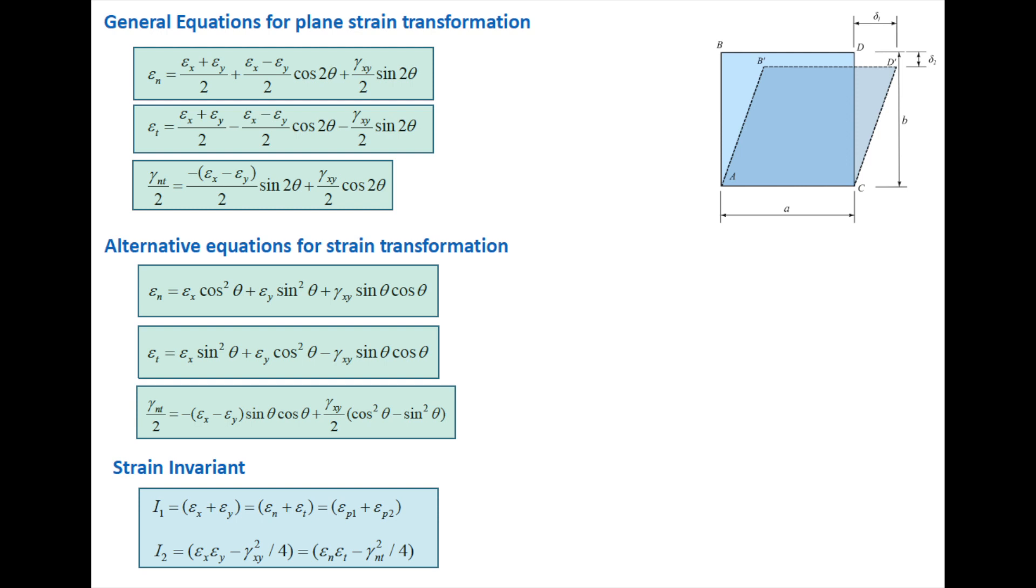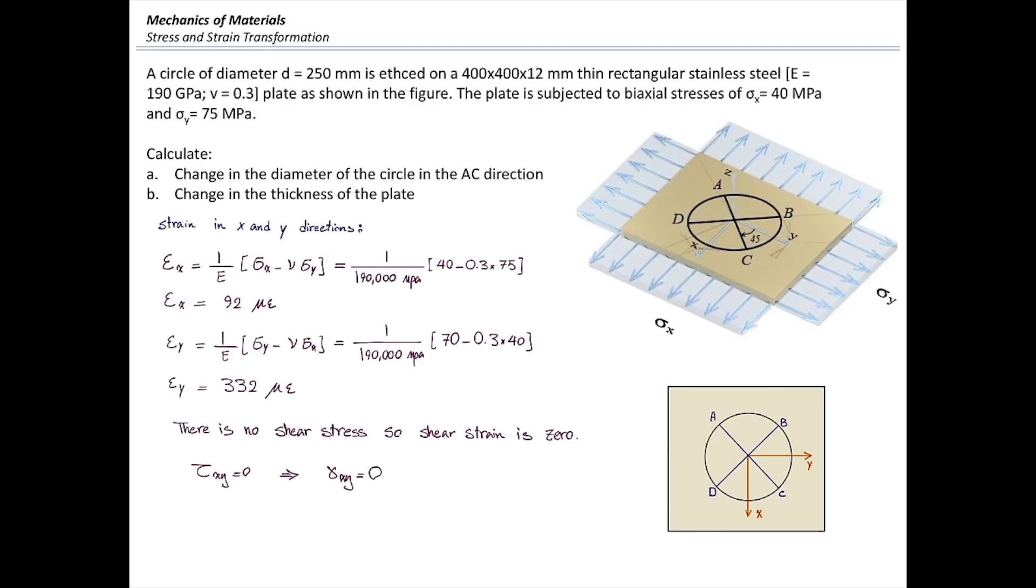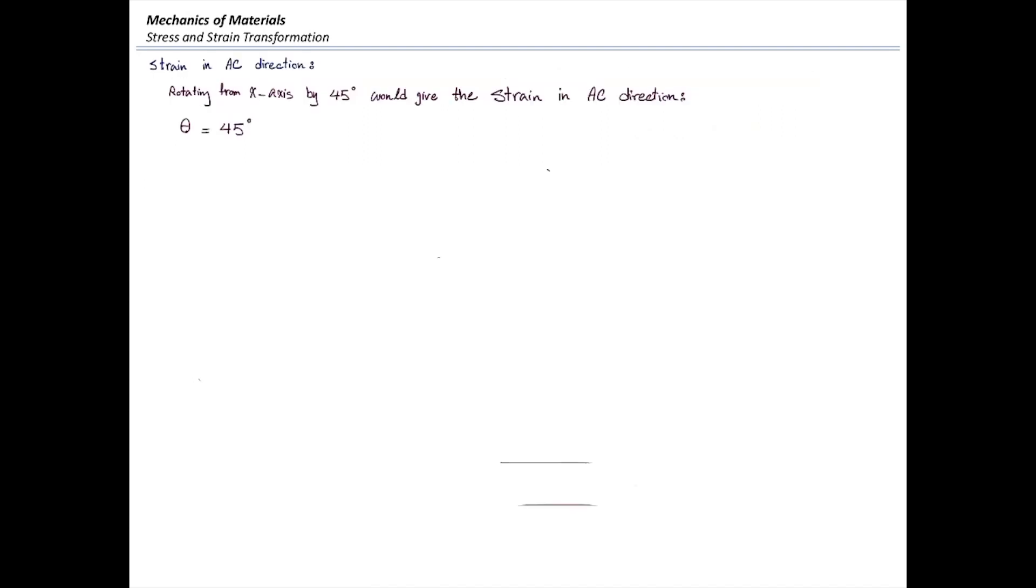Now I'm going to use strain transformation equation that you can find on the equation sheet. First of all, I should know how much should I rotate the element. If I use epsilon n for transforming strain, epsilon n is associated with the x direction. How much should you rotate from x to get along the AC direction? 45 degree. Clockwise or counterclockwise? Counterclockwise. We are not starting from y, we are starting from x. So theta is going to be positive 45 degree.